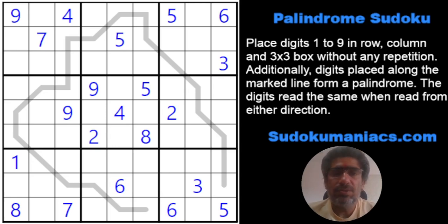So the rules, as you all are aware, the rules of classic Sudoku apply, and you will find either one or multiple gray lines drawn across the grid. The digits that are going to be placed on this line will form a palindrome.